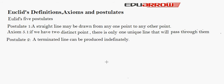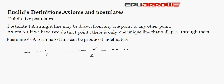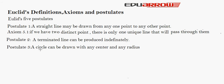Postulate 2 states that a terminated line can be produced indefinitely. This means that if we have a line segment AB, we can extend it from either side to produce a full line. So a line segment AB can be converted into a line by extending it from any side. Postulate 3 states that a circle can be drawn with any center and any radius.